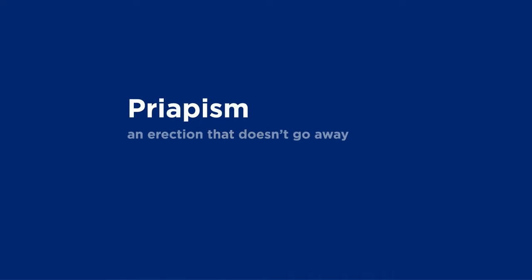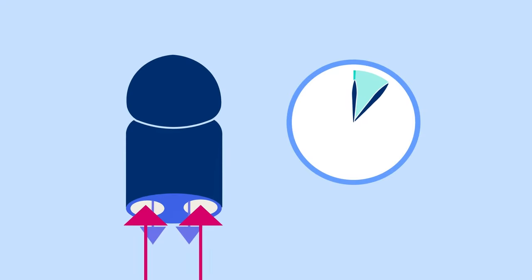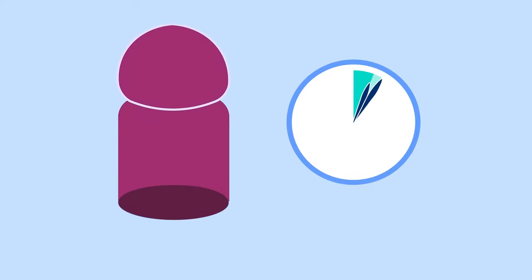Sometimes, penile injections can cause priapism, an erection that doesn't go away. When you have a full erection, no fresh blood flows into your penis. If you have a full erection for too long, it can damage the tissue and lead to permanent ED. This is more likely to happen if you don't follow your care team's instructions for your injection doses or schedule.